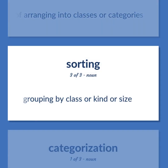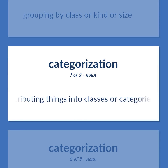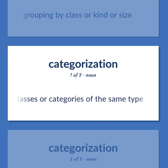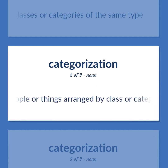Grouping by class or kind or size. The act of distributing things into classes or categories of the same type. A group of people or things arranged by class or category.